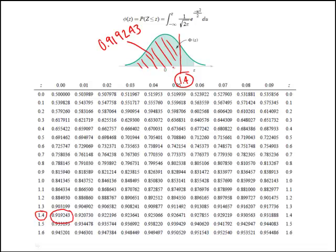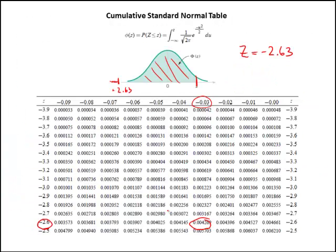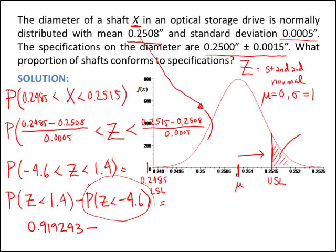So let's write that into our problem. This is equal to 0.919243, minus the area under the curve up to negative 4.6. There's not a whole lot of area past negative 3.99 in the table. Once we're past about negative 4 standard deviations, there's a negligible amount of area. So the area to the left of negative 4.6 is essentially 0. Therefore, the proportion of shafts conforming to specifications is 0.919243.